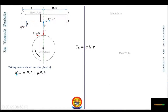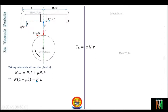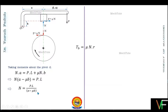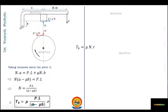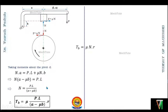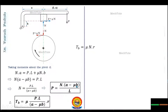Writing the moment equation: N·A = P·L + μN·B. Rearranging gives N(A − μB) = PL, so N = PL / (A − μB). Substituting into the torque equation gives the braking torque: Tb = μPLR / (A − μB). From this equation we can also express the applied force as P = N(A − μB) / L. This is the solution for clockwise drum rotation.